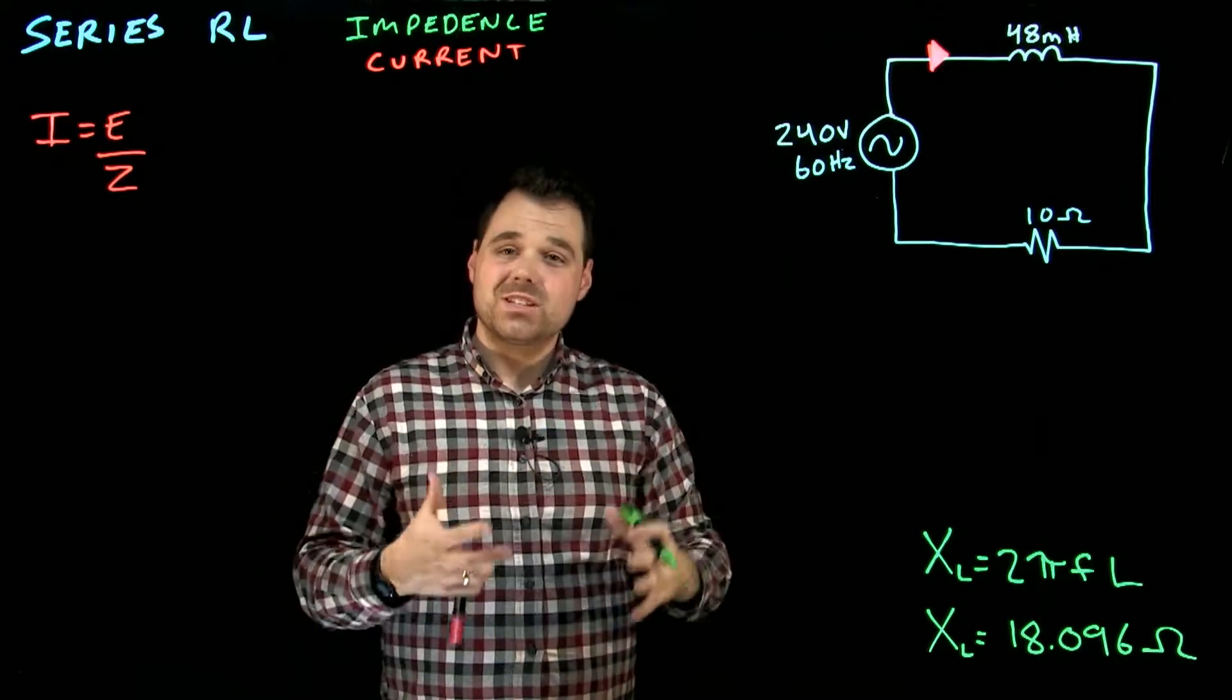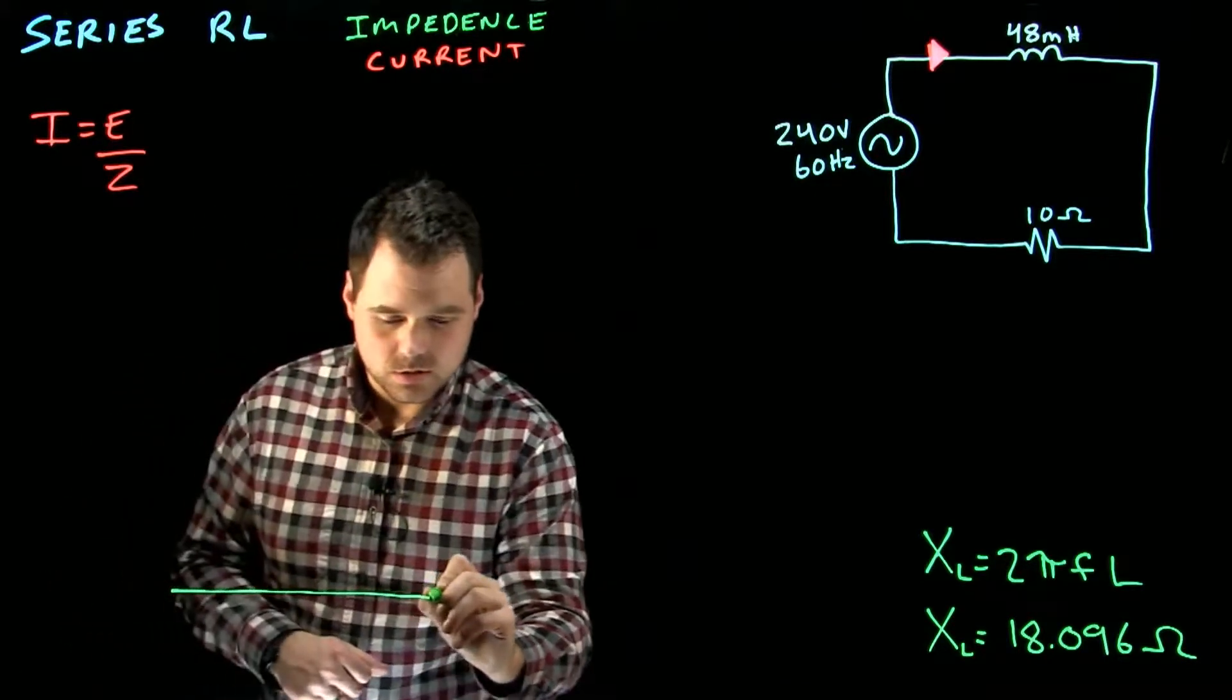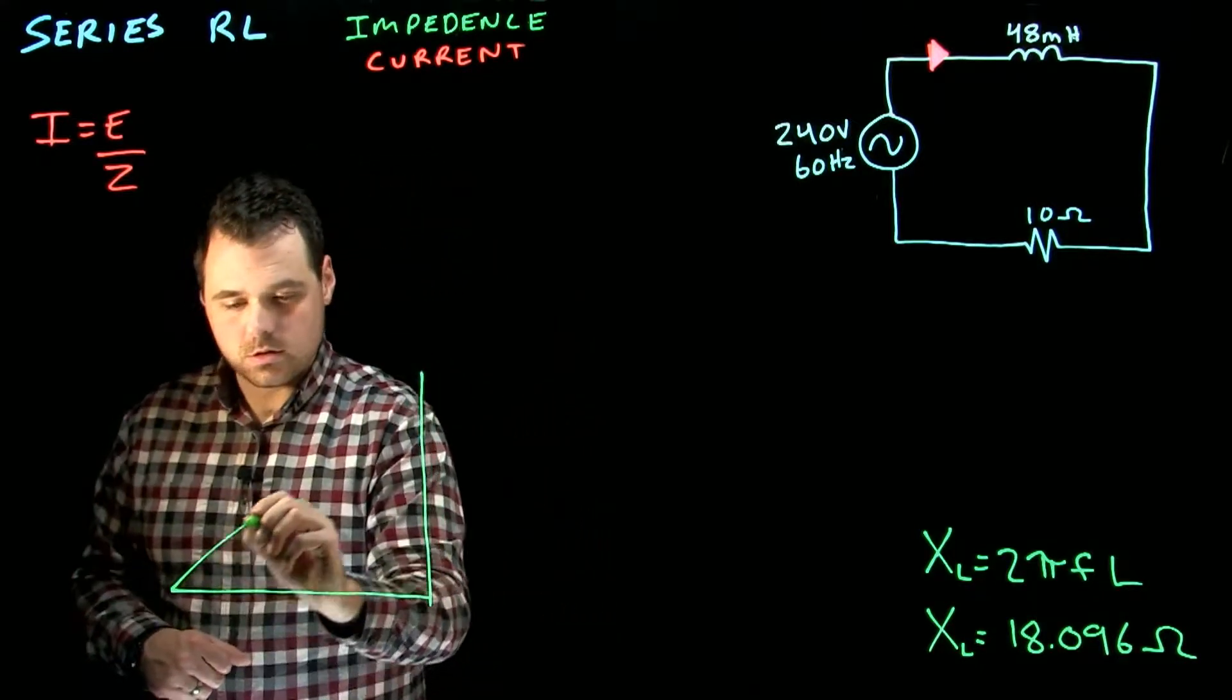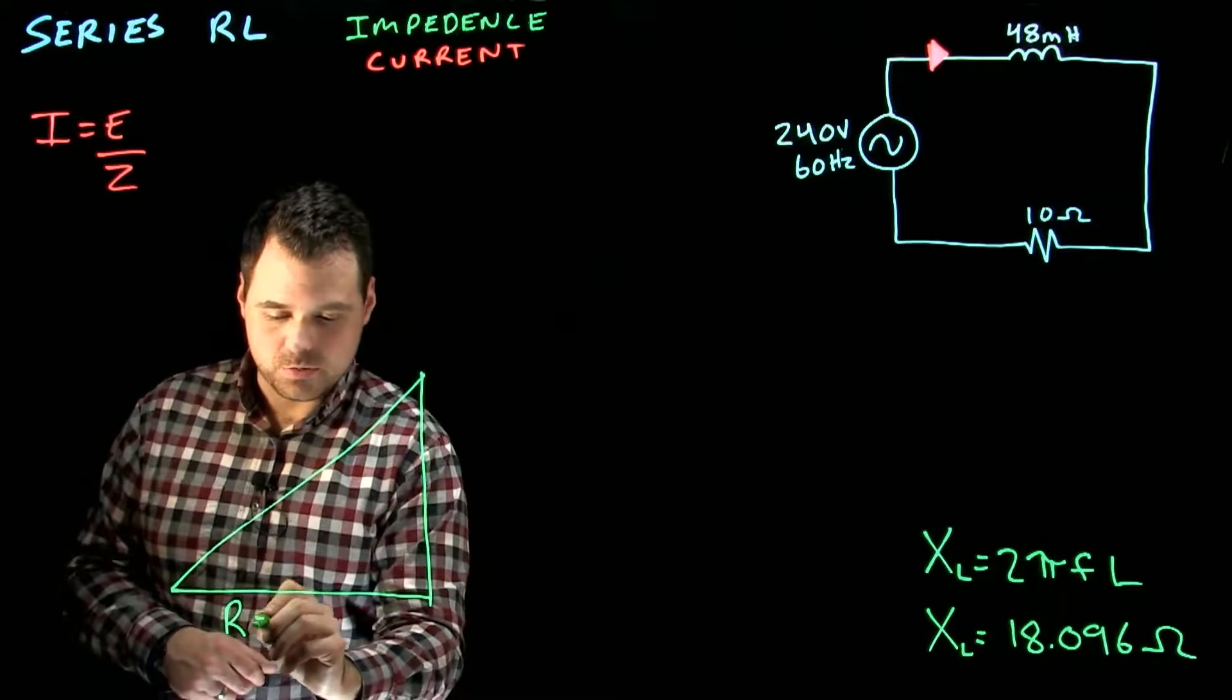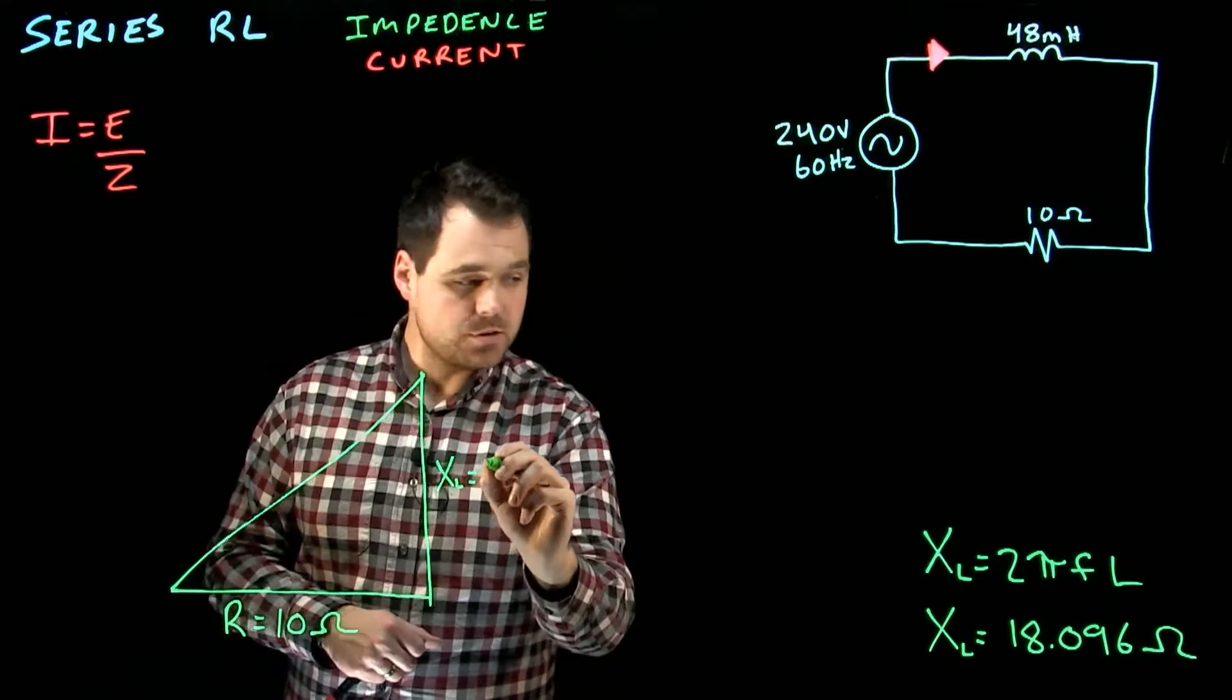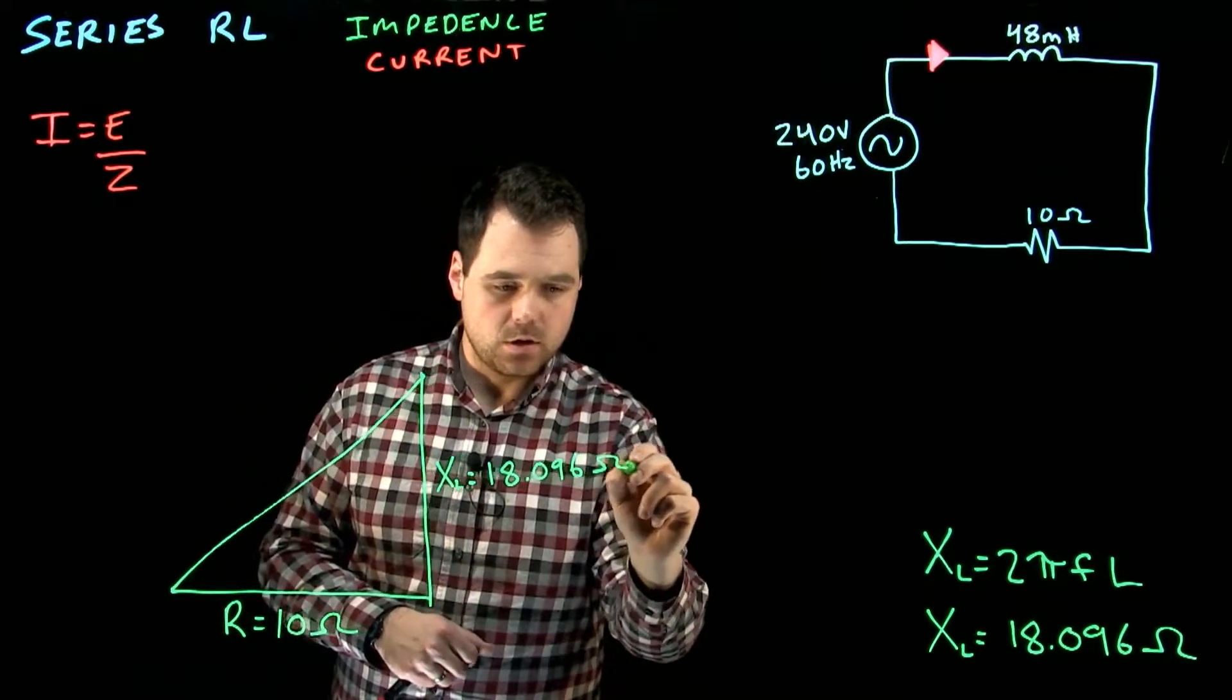What that gives us in this case, in this particular question, is we actually see an impedance triangle, which comes from our resistance, which we said was 10 ohms. And we said our XL, which was 18.096 ohms.